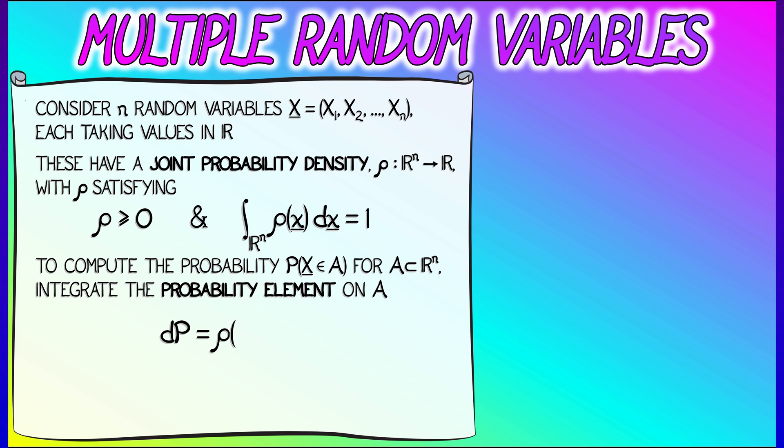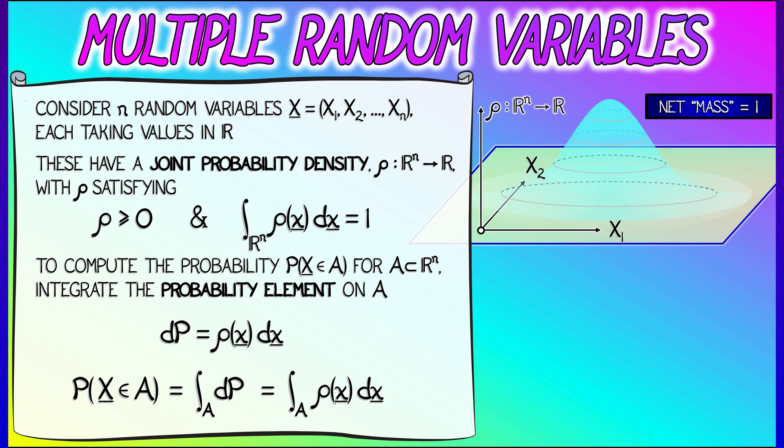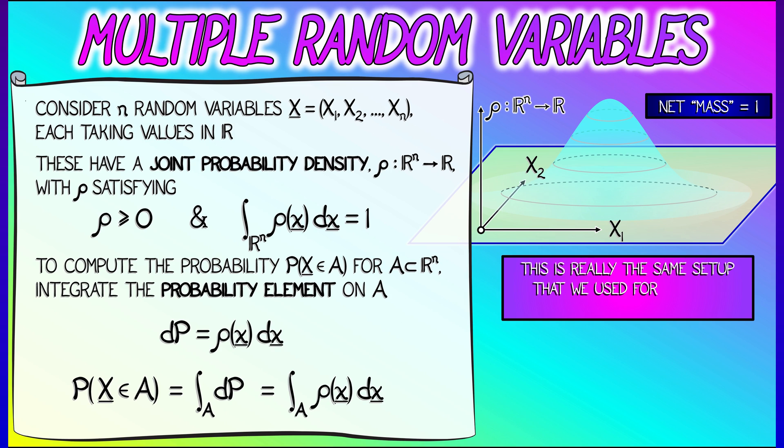Now, the joint probability density satisfies everything that it satisfied before. There's nothing new here. It has net mass one. You integrate the probability element to get the probability. That's all fine.